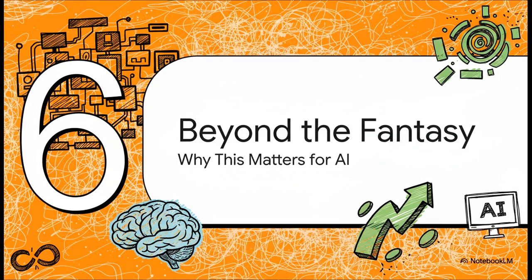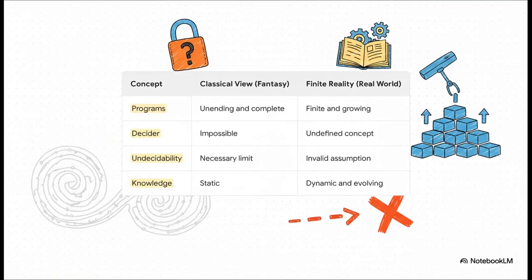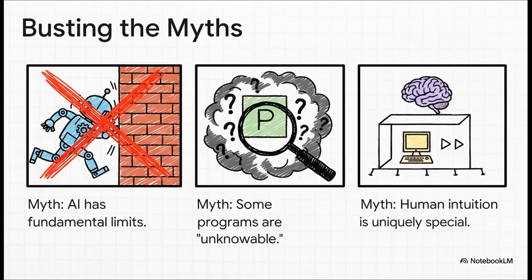Okay, so let's land the plane here. Why does busting this myth actually matter? What are the real world implications for AI and for our understanding of what's truly possible? Let's put these two realities side by side. In the classical fantasy view, the set of all programs is unending and complete. This makes a universal decider impossible, and it creates what looks like a hard limit on knowledge. But over here, in the finite, real world, our collection of programs is always growing. Here, a universal decider for an unending set is an undefined concept, and so-called undecidability is really just an artifact of a bad assumption. In our world, knowledge isn't static, it's dynamic, and it's always evolving. It means we can finally bust some pretty powerful myths. The idea that AI has these inescapable limits baked into logic itself, that's an artifact of the fantasy. The notion that some specific programs are just unknowable? They don't exist. Any specific program can be analyzed. And the argument that human intuition must be somehow magically superior to get around this problem? Well, that's just based on a misunderstanding of what the problem ever was.